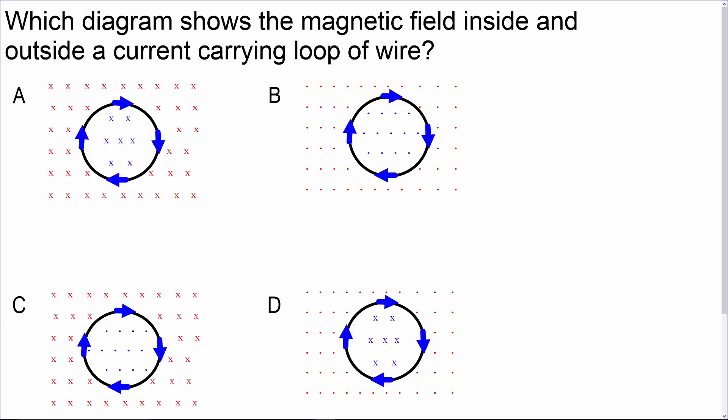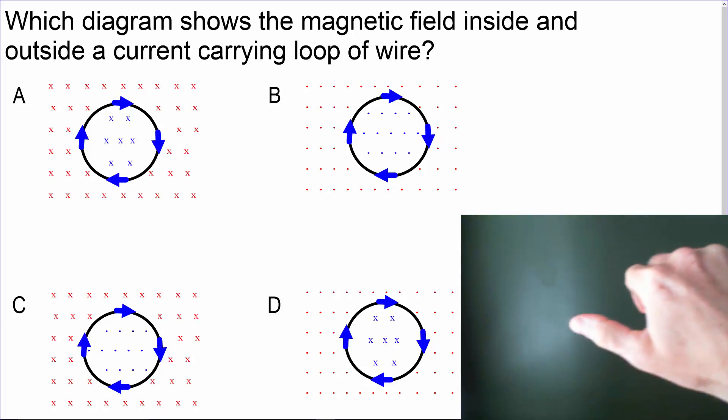If we take the very bottom of the loop, we can see that the current is pointing the same direction my thumb is.